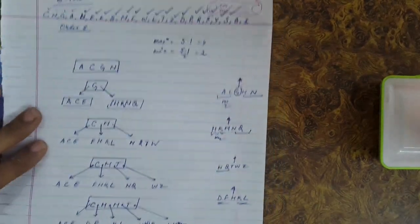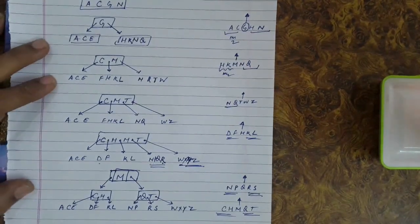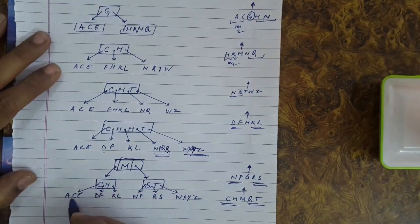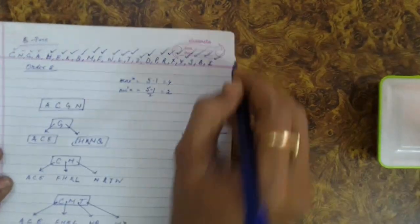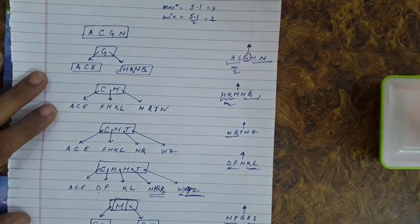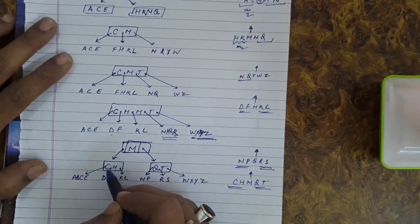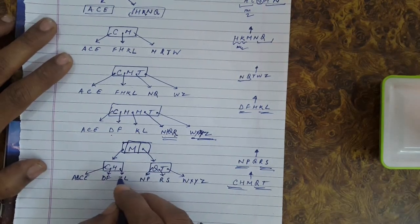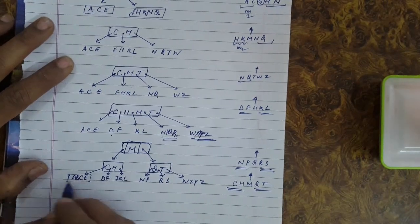Now let us insert B — it goes into the A, B, C, E node. Then insertion of I: less than M, greater than H, so I will come in that node. This is the final tree.